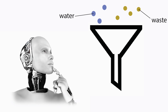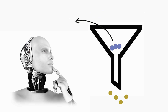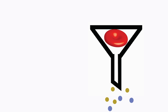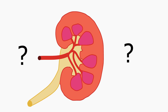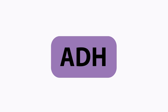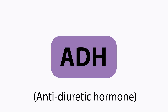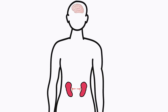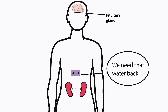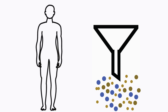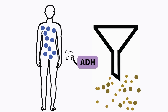Your blood is not some advanced AI that knows not to filter out water — it filters out whatever passes through the kidneys, whether it be waste or water. Red blood cells don't get filtered because they're too big to fit. So how do you retain water if it all gets lost through your kidneys? This is where ADH, or anti-diuretic hormone, comes in. To reabsorb water filtered out of the kidneys, the pituitary gland releases ADH, which stimulates your kidneys to reabsorb water back into the blood. Essentially, ADH prevents you from peeing out all the water in your body.